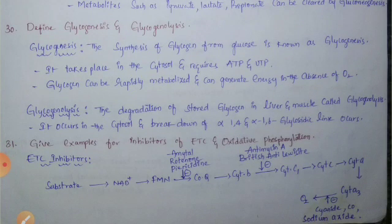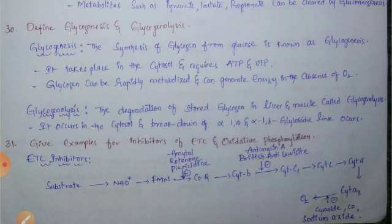Define glycogenesis and glycogenolysis. Glycogenesis means the synthesis of glycogen from glucose. It takes place in the cytosol and requires ATP and uridine diphosphate. Glycogen can be rapidly metabolized and generate energy in the absence of oxygen.